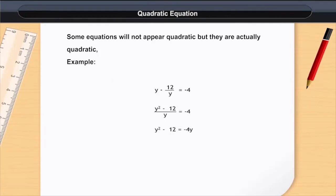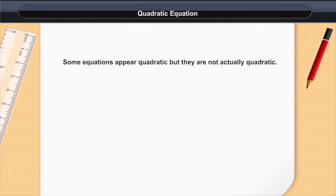Example: y - 12/y = -4. Multiplying through: y² - 12 = -4y, which implies y² + 4y - 12 = 0.